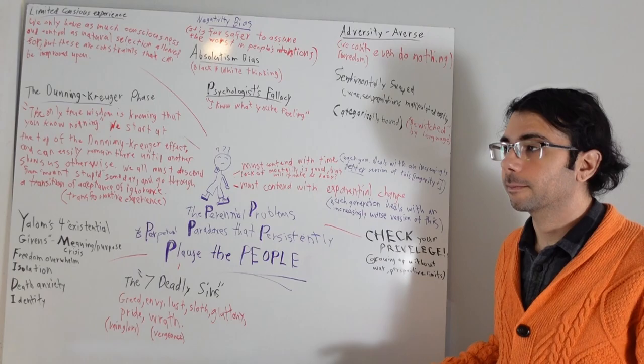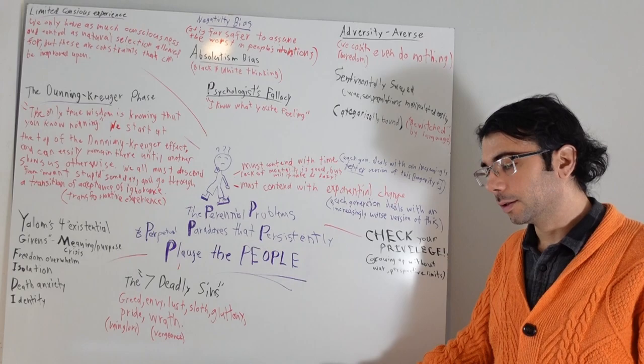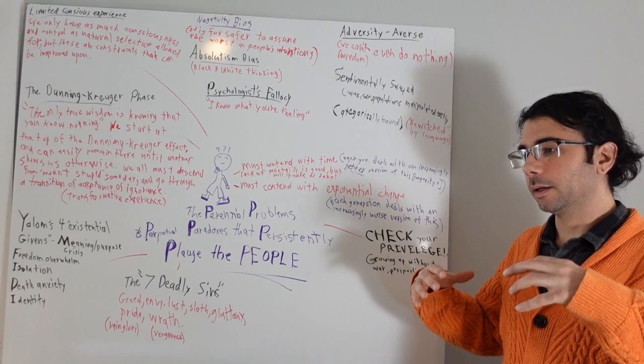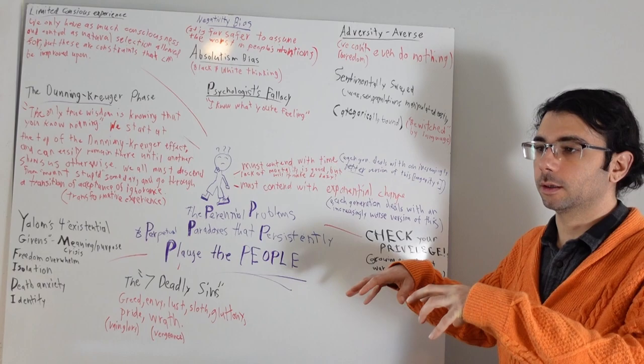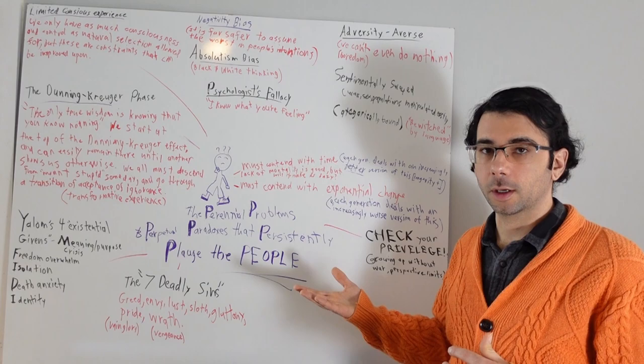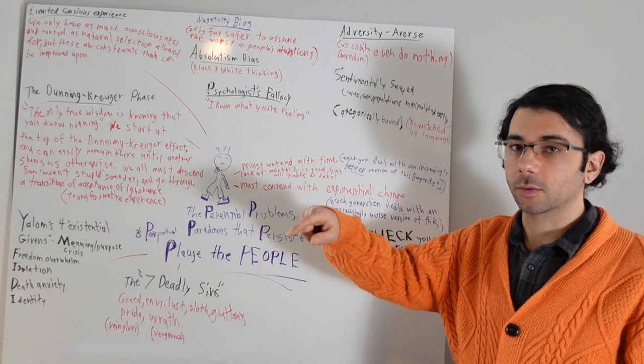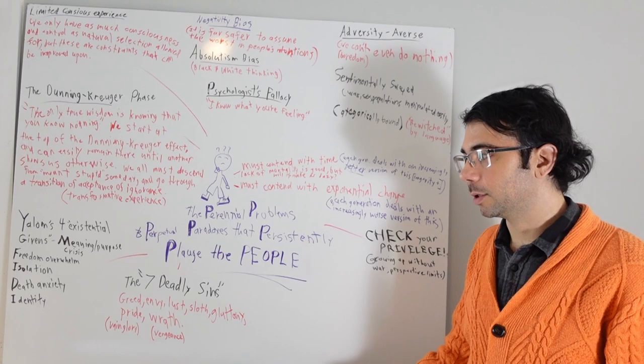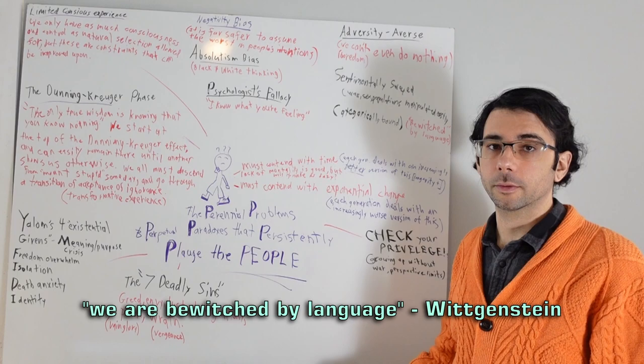This brings me to the categorical imperative or being bounded by category. The brain does this compartmentalization where its primary function is to place people into camps and do confirmation bias and try to condense and compartmentalize reality. This gets into the nominological world, the world of the nameable. We place labels on everything, on people and things and objects. As Wittgenstein put it, we are bewitched by language.